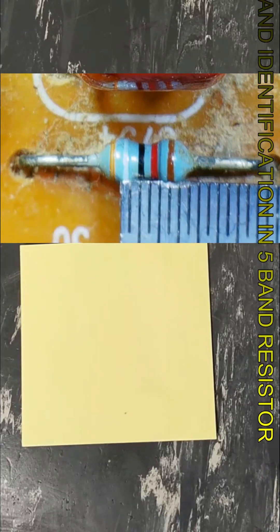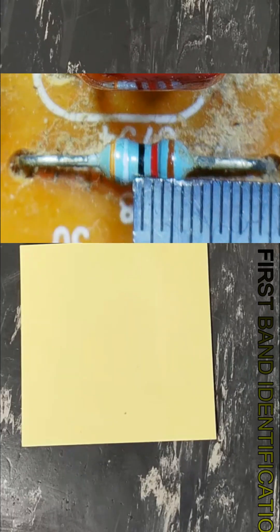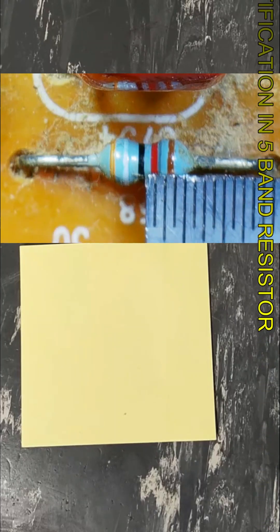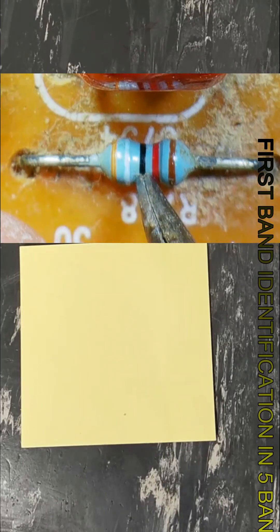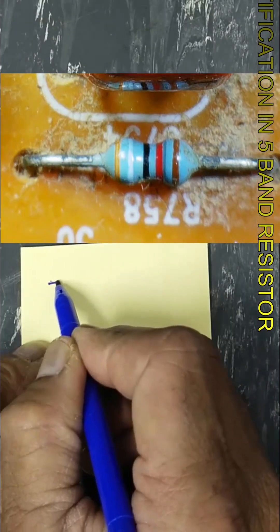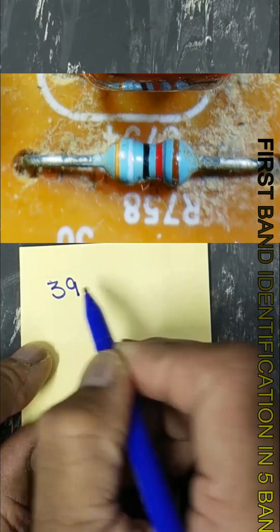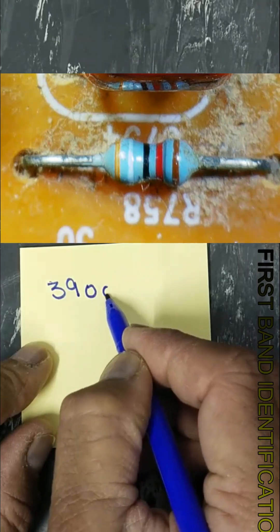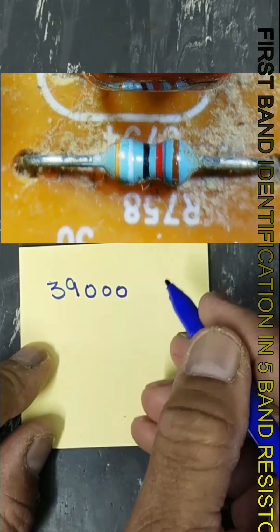First and second band, second and third band, third and fourth band - approximately double distance. Three, nine, zero, double zero. Orange three, white nine, black zero, red two zeros, then brown.